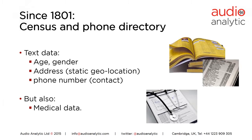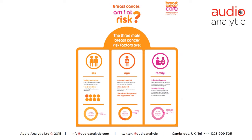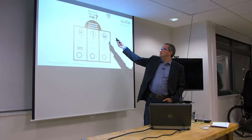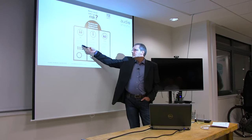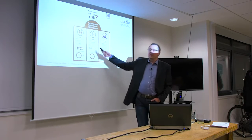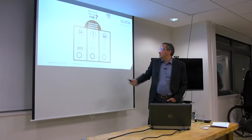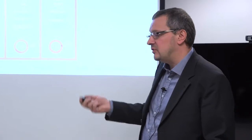Also interesting in text data are medical records, which date from way back. If you look at these two types of data together, you can do something like predict cancer risk. You can correlate the risk of a certain medical condition with census data. For example, the three main breast cancer factors are gender — being a woman — age, and family history. These are essentially text records.